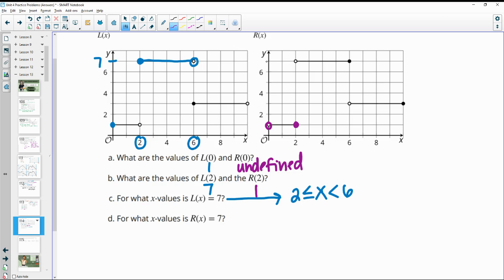And then when does R(x) equal seven? So this one has an open circle first, and then it stays solid until that closed circle. So it again starts at two and ends at six, but it's not equal to two. So it's just going to be two is less than x and x is less than or equal to six.